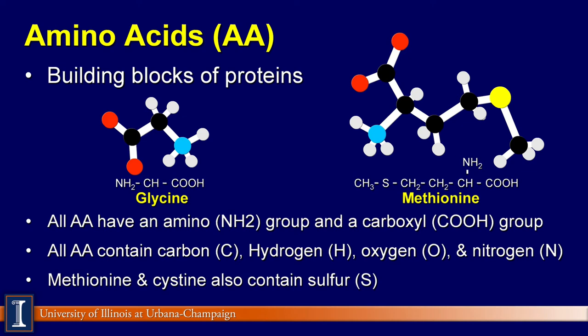All amino acids have an amino or NH2 group and a carboxyl or COOH group, and all amino acids contain carbon, hydrogen, oxygen, and nitrogen. Methionine and cysteine also contain sulfur.